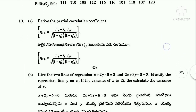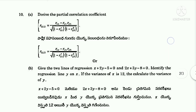Tenth A: Derive the partial correlation coefficient equation. Or Tenth B: Given the two lines of regression x plus 2y minus 5 equals 0 and 2x plus 3y minus 8 equals 0, identify the regression line y on x if the variance of x is 12, and calculate the variance of y.